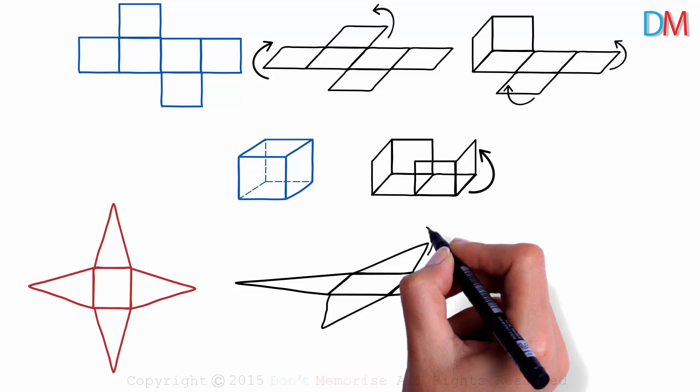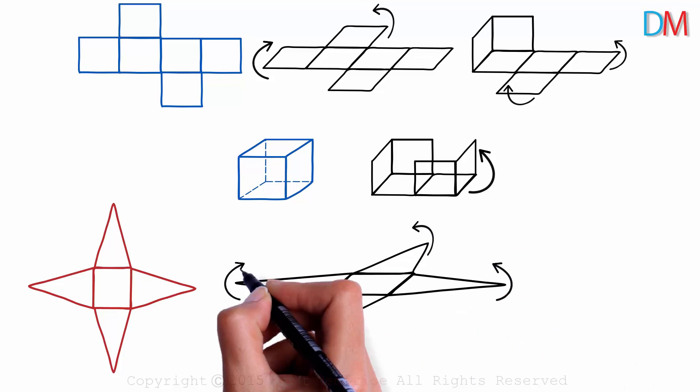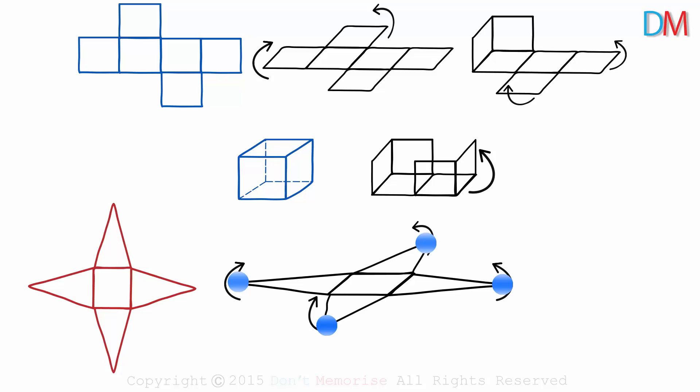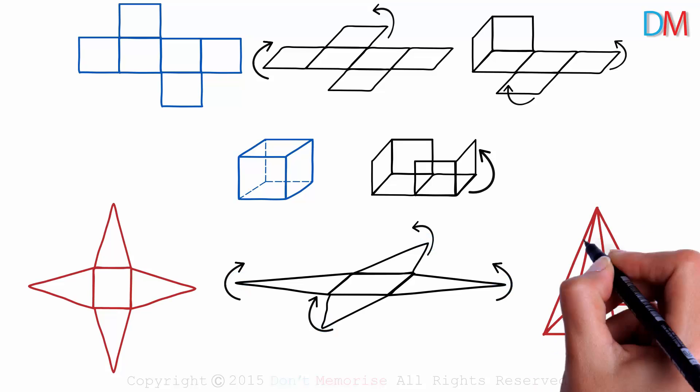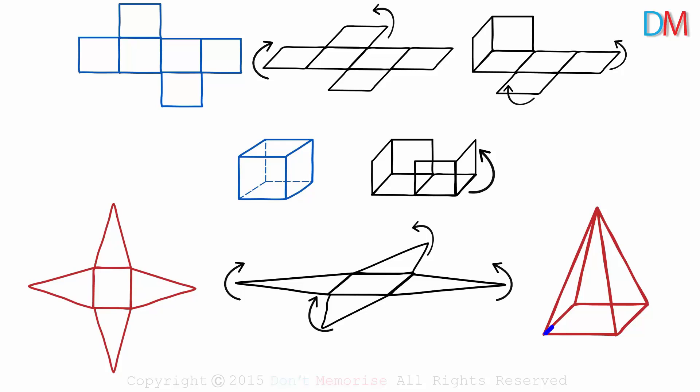We just have to rotate each triangle such that all the top vertices meet at a single point. What we get is a square pyramid. A square as the base, and four triangles as its faces.